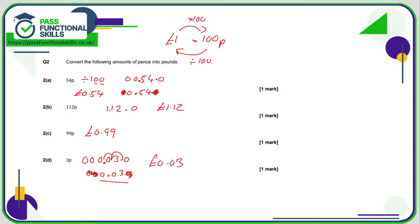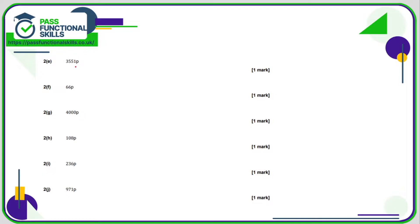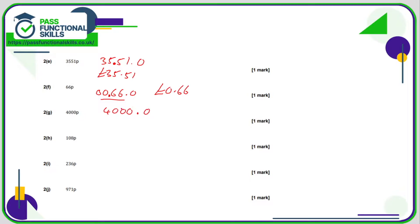3551 pence divided by 100: write as 3551.0, move the decimal point two positions — that's £35.51. Sixty-six pence: write as 66.0 with zeros in front, move two positions — that becomes zero pounds sixty-six pence. Four thousand pence: move the decimal point two positions — that is forty pounds. 108 pence is £1.08. Two hundred and thirty-six pence: move two positions to the left — that is two pounds thirty-six.